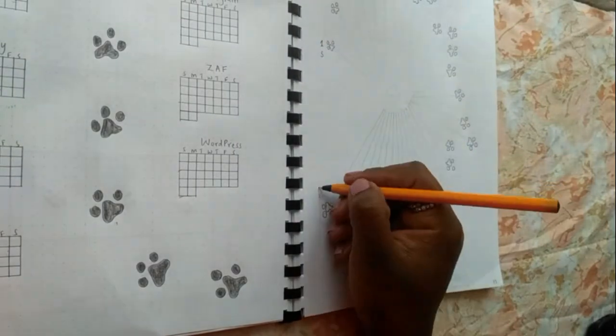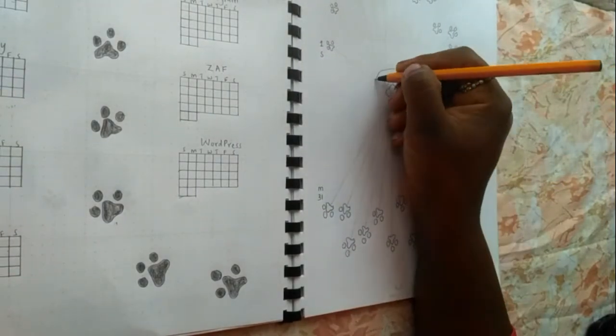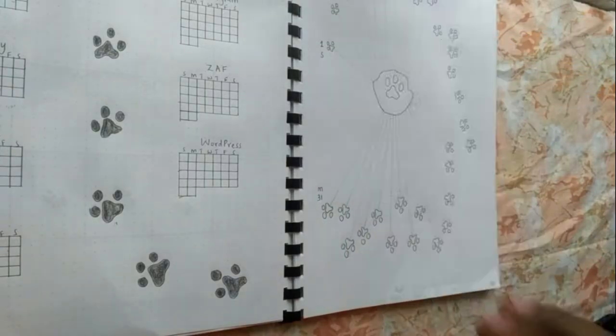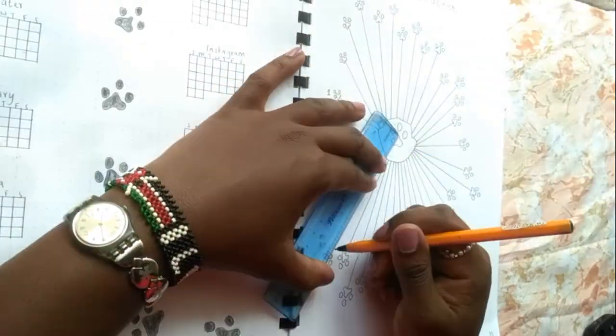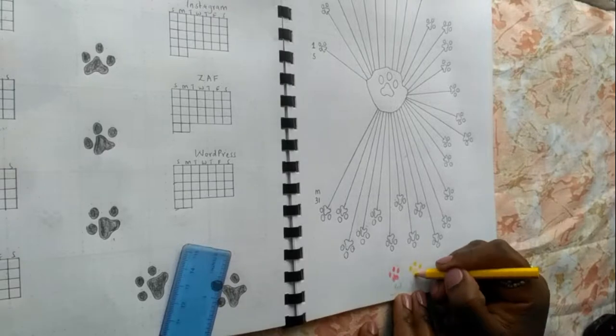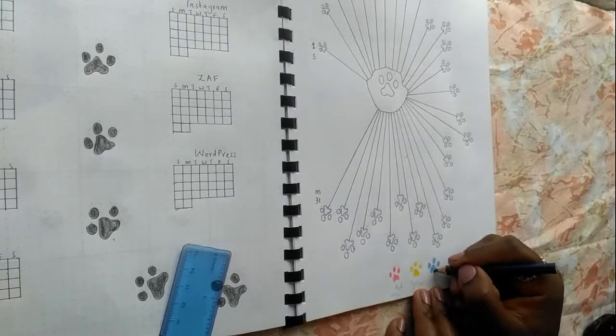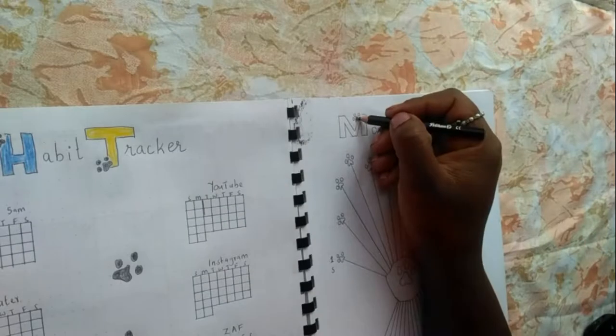Then I drew a shield so that all the tracker points can come to the shield. Finally, I placed my legend at the bottom. These are the color codes I will use to mark my mood.